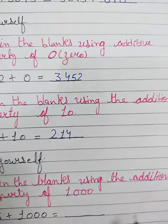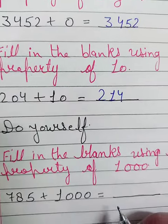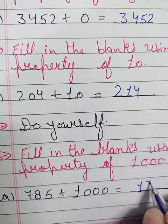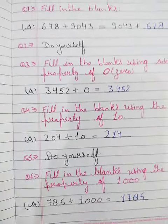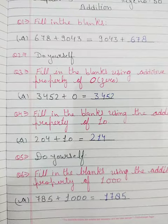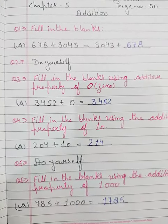Question number 6: fill in the blanks using the addition property of 1000. Here 785 + 1000, so you will write here 1785. Like this you will do questions 1 to 7 in your book only. Now do it yourself, complete your work. Thank you.